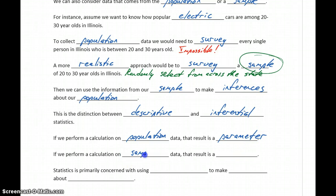If we perform a calculation on a sample, we take the average of our sample or calculate a percentage for our sample, that result is called a statistic.